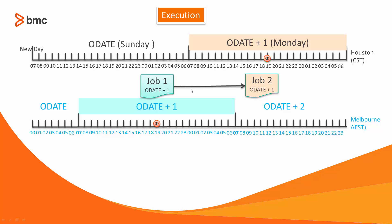If the jobs are placed in New Day, which is 7 a.m. Houston time on Monday, the Melbourne job will run immediately because that hour has already passed. By using forward ordering, the New Day places the jobs in AJF one day in advance, and when the New Day time is reached in Melbourne time zone, the job becomes eligible to run and then executes at the specified front time.